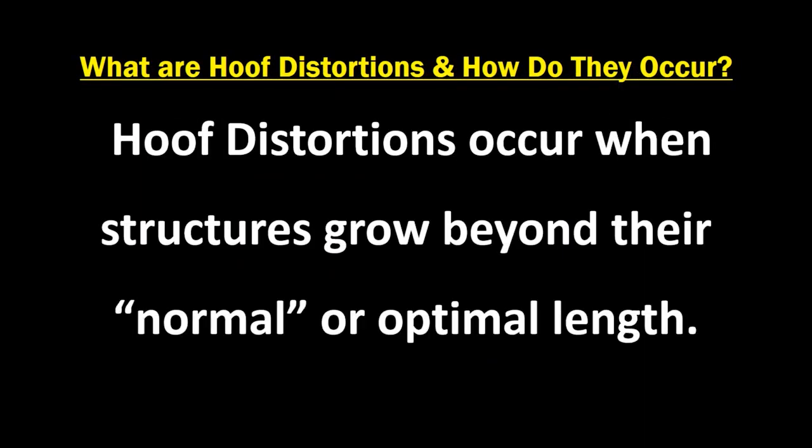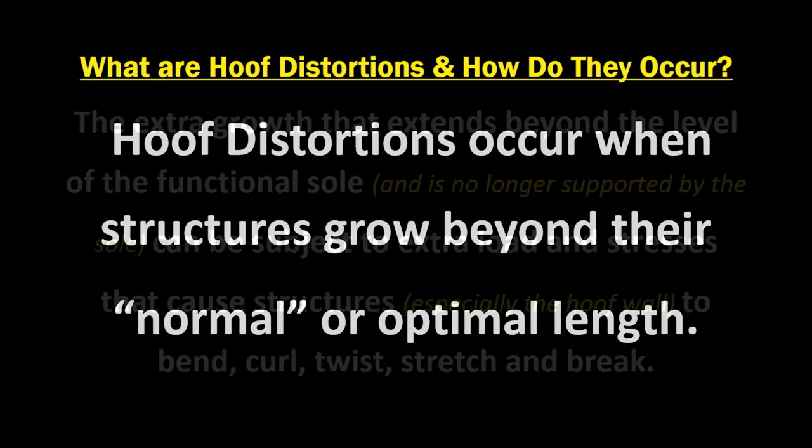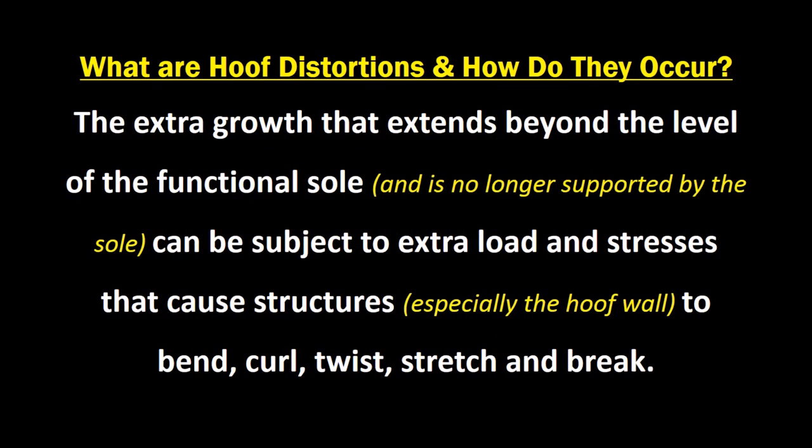What are hoof distortions and how do they occur? Hoof distortions occur when structures grow beyond their normal or optimal length. The extra growth that extends beyond the level of the functional sole and is no longer supported by the sole can be subject to extra load and stresses that cause structures, especially the hoof wall, to bend, curl, twist, stretch, and break.